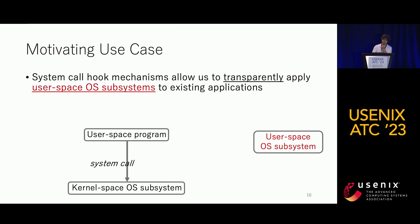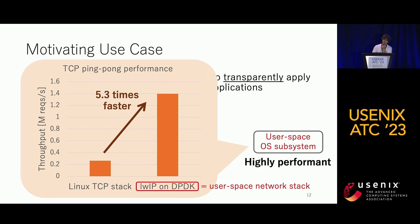The motivation of this work is to use a system call hook mechanism to transparently apply user space OS subsystems to existing applications. The reason we focus on user space OS subsystems is performance — they are very fast. For example, AWP is a portable network stack, and when run on DPDK in user space, it achieves more than five times better throughput compared to the standard Linux TCP stack. We want to use this.